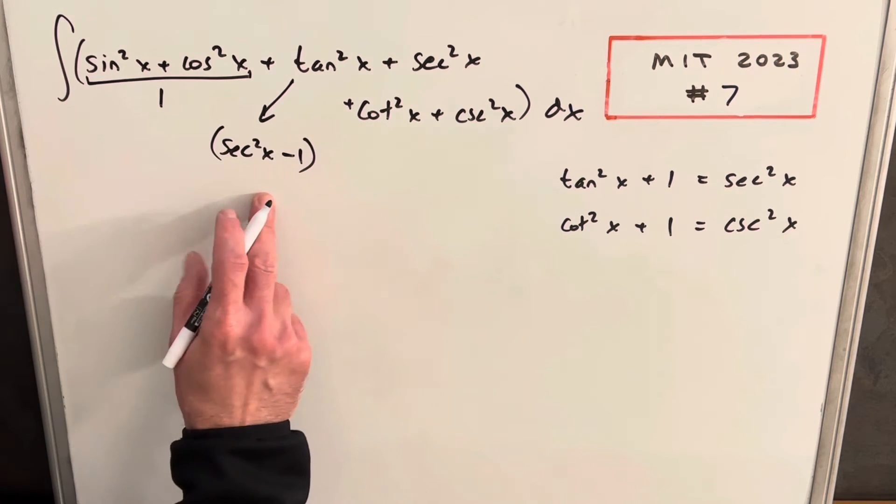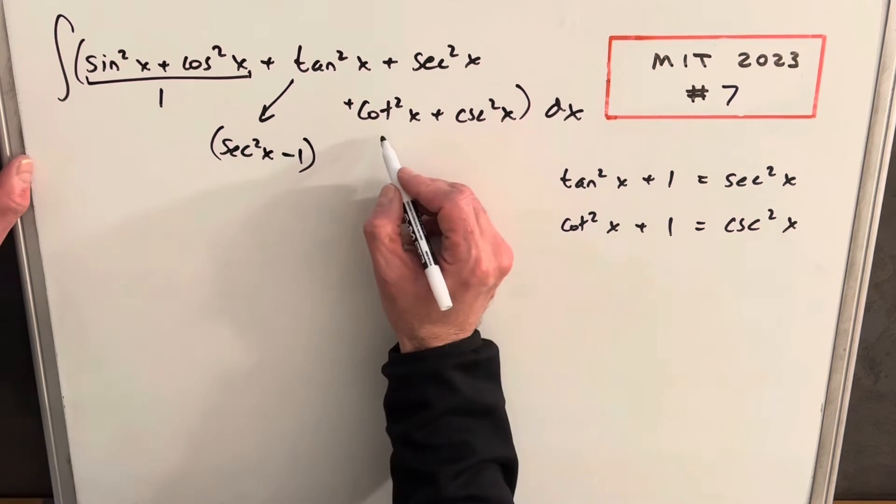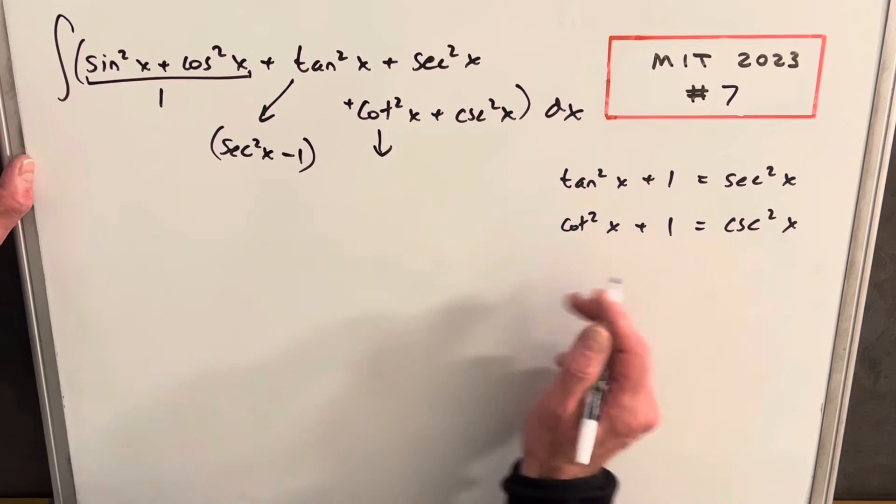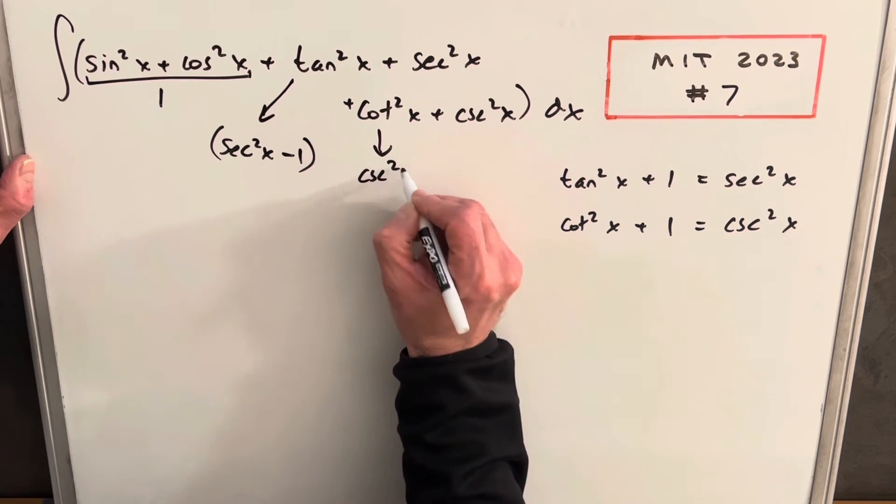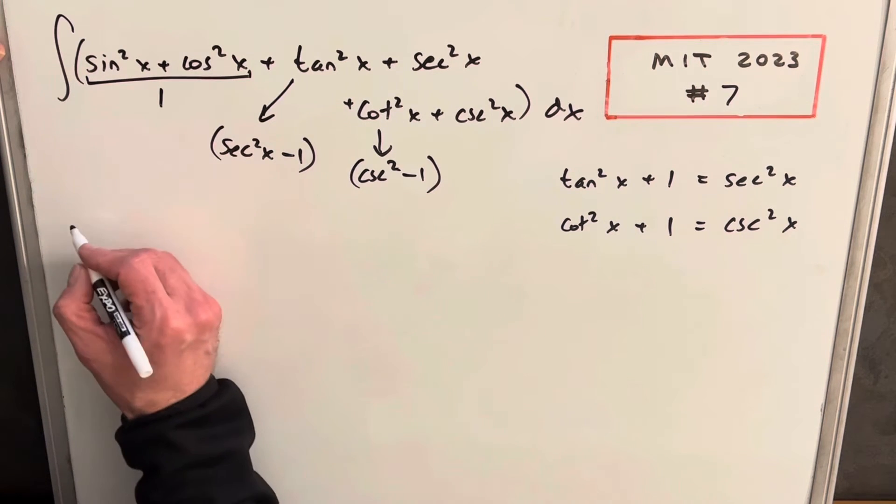The reason I want that is it's just a little easier to integrate secant compared to tangent. And then here with cotangent squared, I'm going to write this one as cosecant squared minus 1.